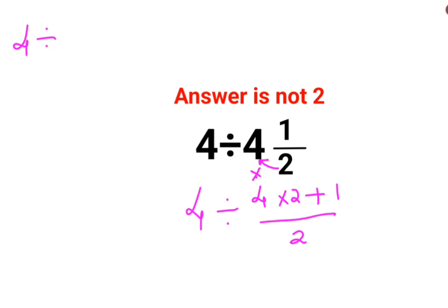Now whenever you have division, you will follow the rule of KCF, where K stands for keeping the first number as it is, C stands for changing the division sign to multiplication, and F stands for flipping or taking reciprocal of 9 by 2, which is 2 by 9.